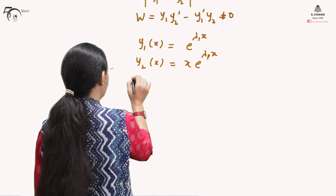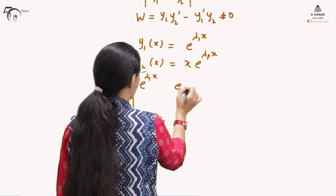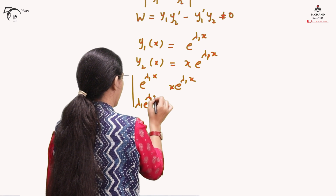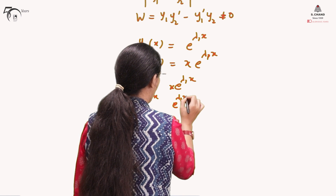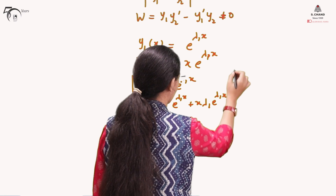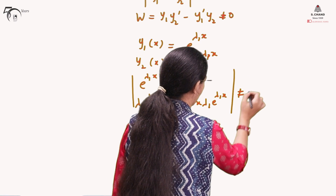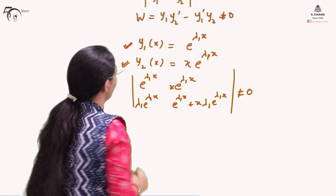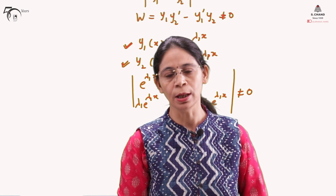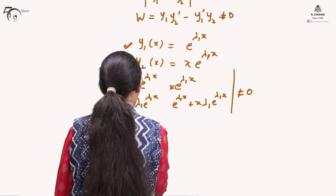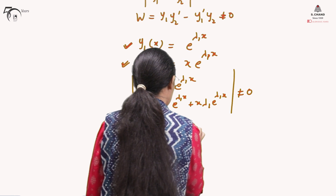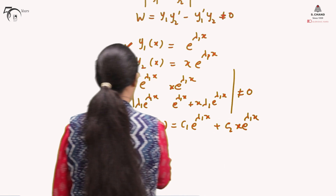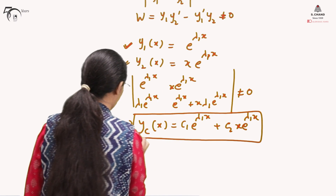We can verify: with y1 = e^(λ1·x) and y2 = x·e^(λ1·x), the Wronskian gives e^(λ1·x)·(e^(λ1·x) + x·λ1·e^(λ1·x)) − λ1·e^(λ1·x)·x·e^(λ1·x), which is clearly not zero. Therefore, for equal roots, the complementary function is written as yc = C1·e^(λ1·x) + C2·x·e^(λ1·x).